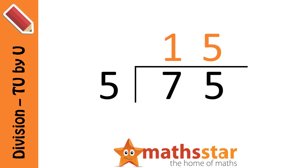Let's say that again right from the beginning. So 7 divided by 5 is 1, remainder 2. And 25 divided by 5 is 5. So our answer is 15.